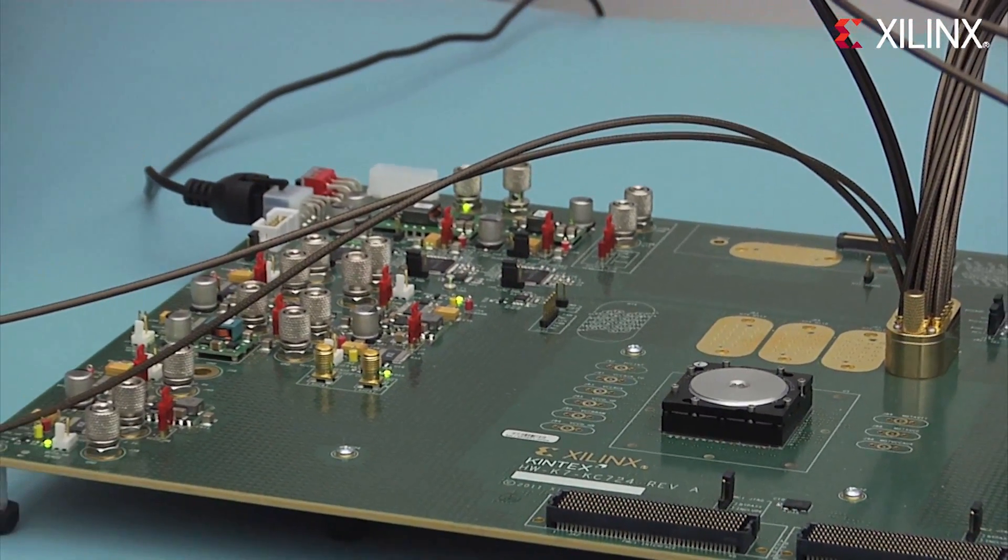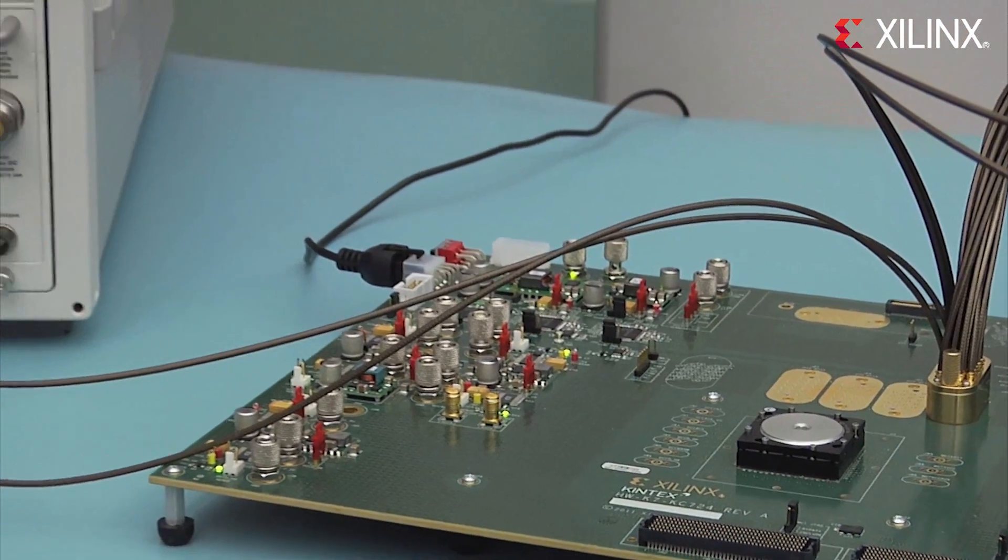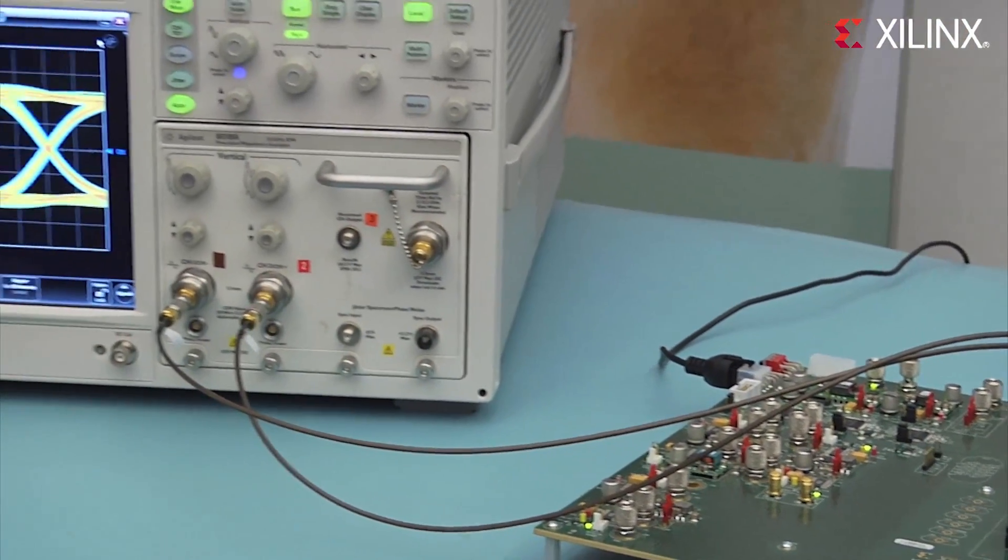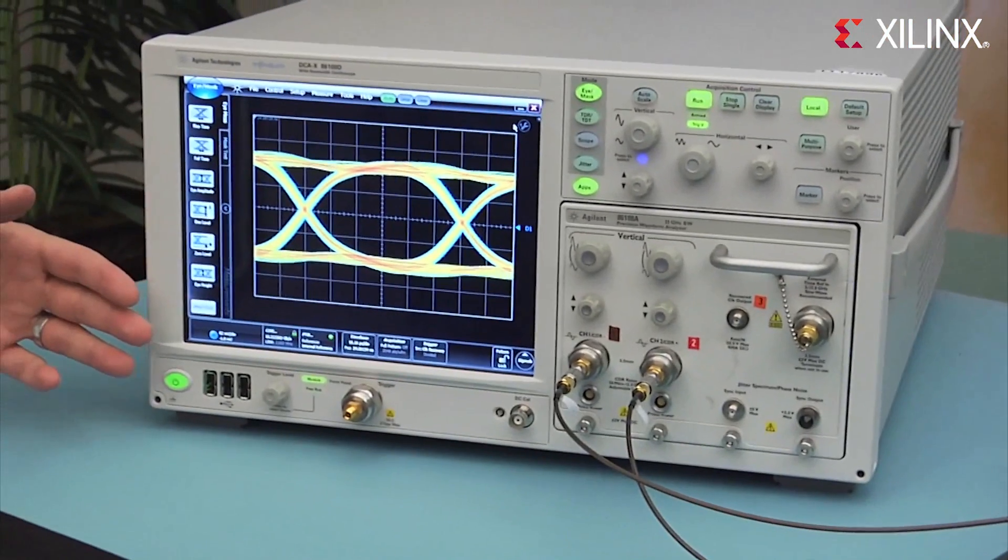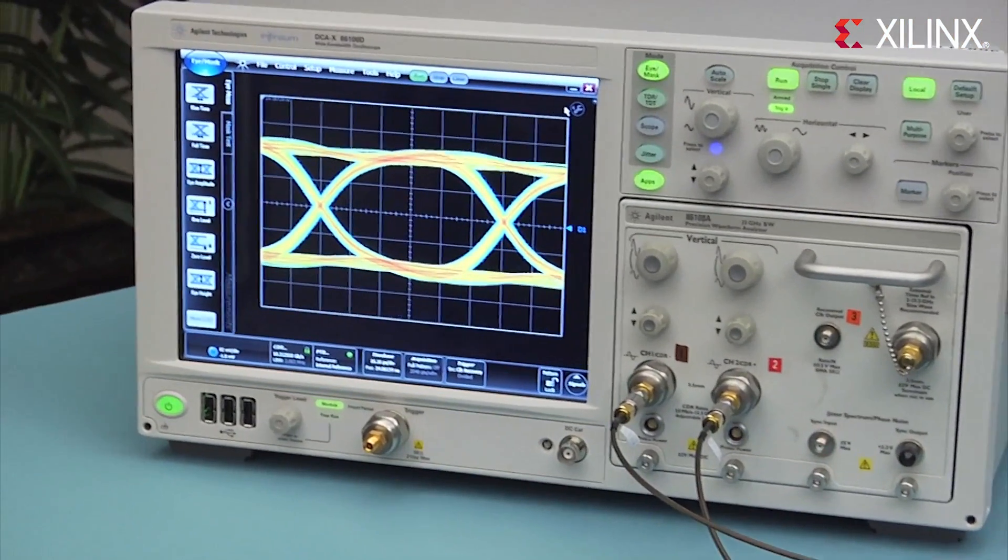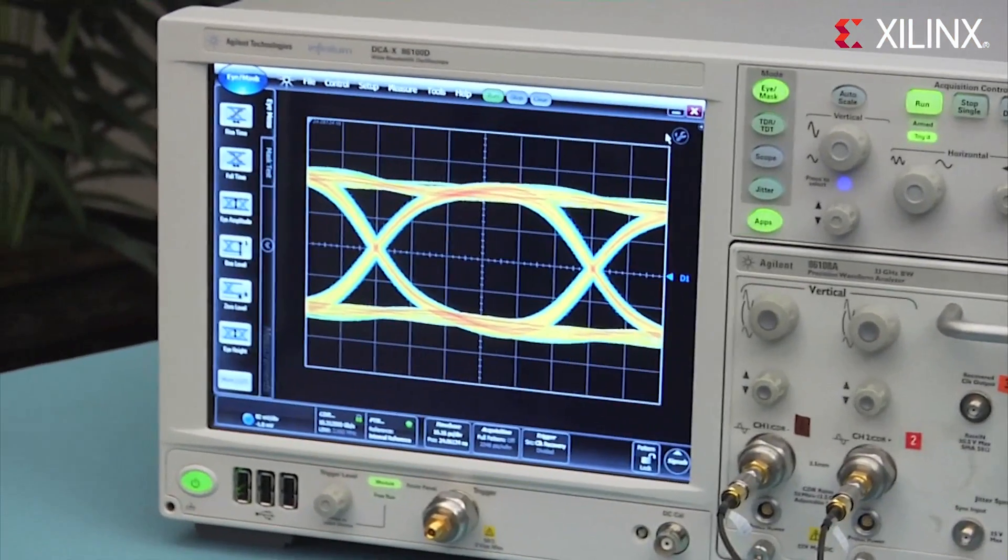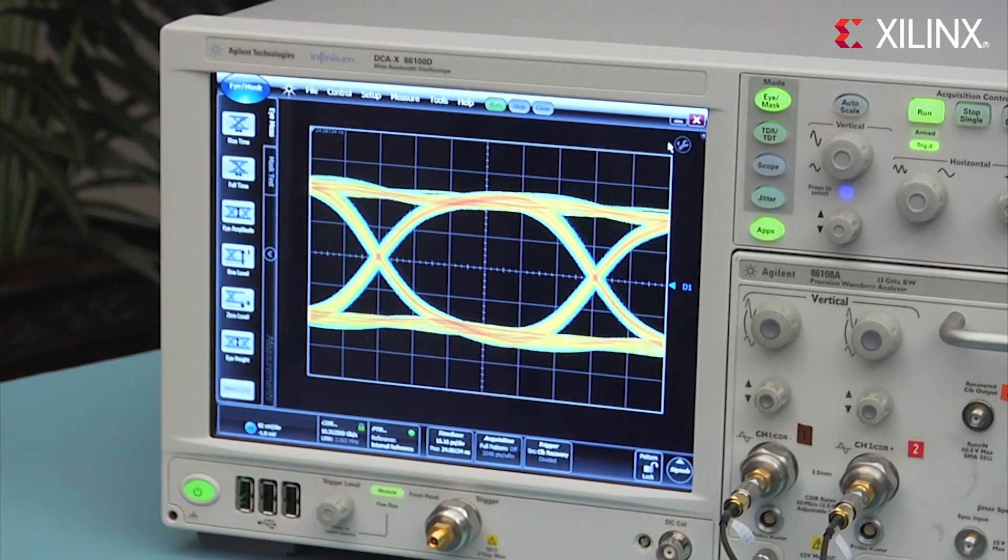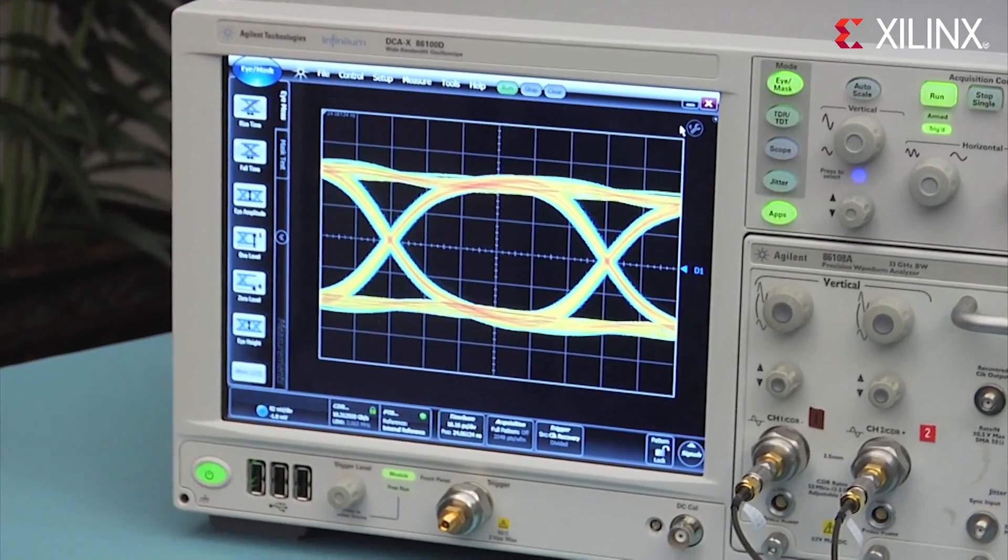Perhaps most impressively, we've been able to measure the performance of the high-speed serial transceivers. Here we are running the transceivers at 10.3125 gigabits per second with a full PRBS 31 test pattern and are measuring the transmit eye on the Agilent DCA-X test equipment.